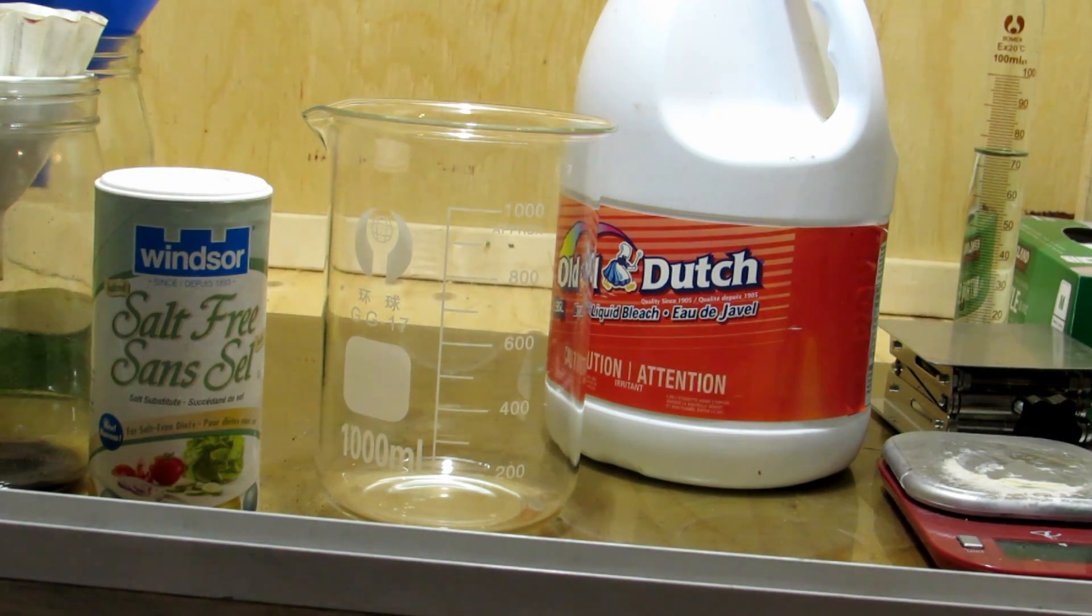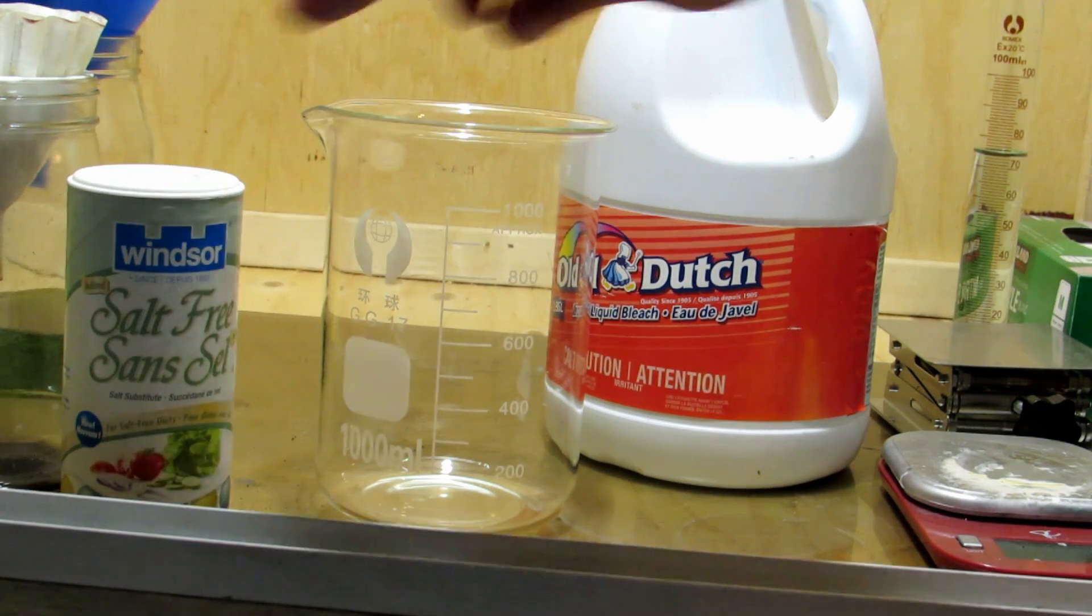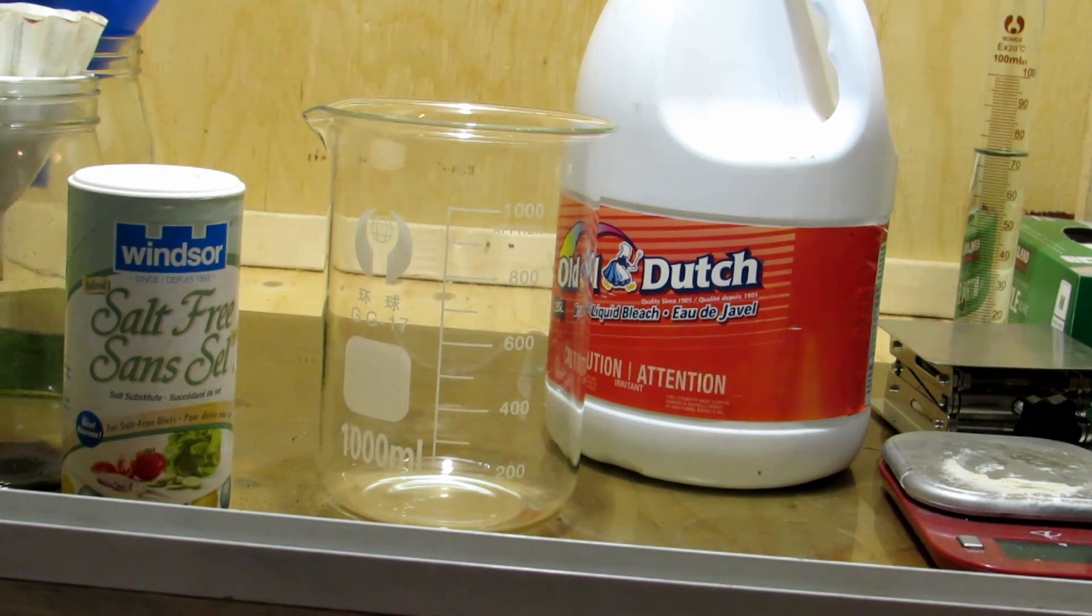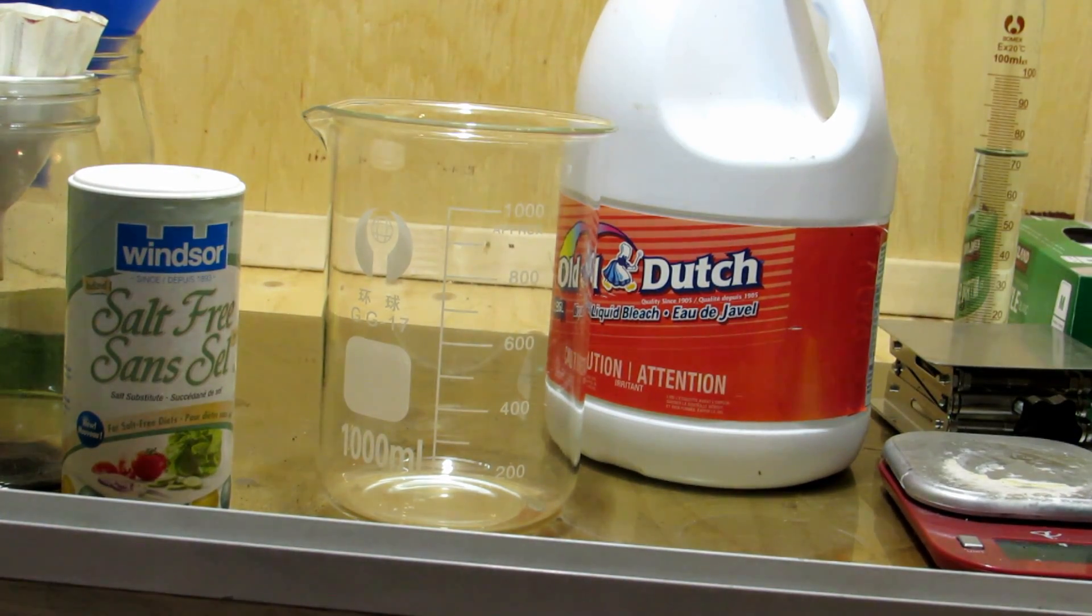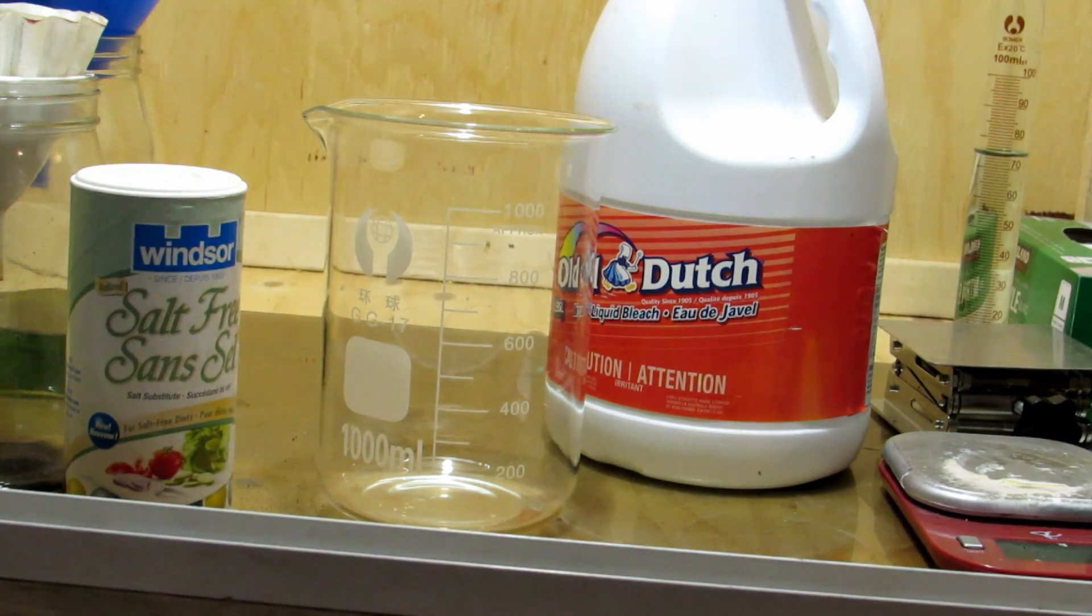This potassium chloride here can be found as salt-free salt at places like Thrifty's, or at home hardware you can buy huge bags of potassium chloride salt for salting your roads. A huge bag is like $20 there, which is incredibly cheap, considering this was $13 for 300 grams where you could buy 20 pounds for $20. I bought this before I knew I could get it so cheap somewhere else.